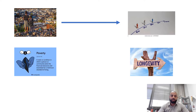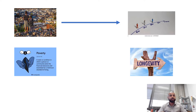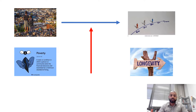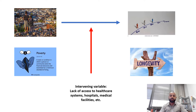One might think that poverty and longevity have no relationship on their own — that how long a person lives has nothing to do with poverty. But if I feel that the reviewer or examiner might question how I am establishing a relationship between two variables that may seem unrelated, I have to introduce something called the intervening variable. The intervening variable basically establishes a relationship between these two variables. In this case, the intervening variable is the lack of access to healthcare systems, hospitals, and medical facilities.